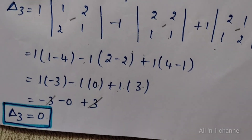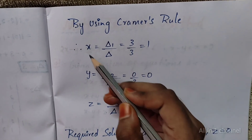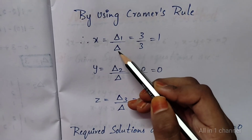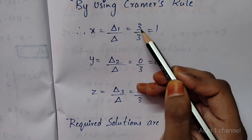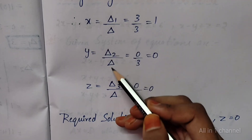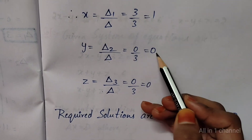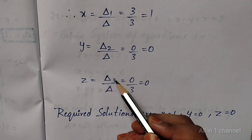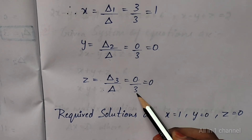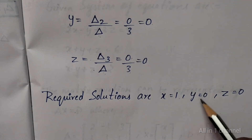So we get delta 3 equal to 0. Using Cramer's Rule, we need to find x, y, z values. x equal to delta 1 by delta: delta 1 value 3, delta value 3, so x equals 1. y equal to delta 2 by delta: delta 2 value 0, delta value 3, so 0 by 3 equals 0. z equal to delta 3 by delta: delta 3 equal to 0, delta value 3, so 0 by 3 equals 0. Required solutions are x equal to 1, y equal to 0, z equal to 0.